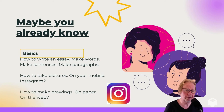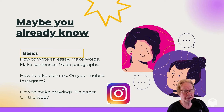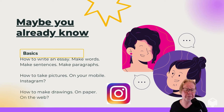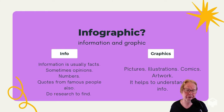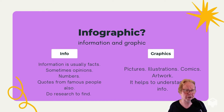Maybe you already know a little bit about how to write sentences and paragraphs in English. Maybe you can take pictures or make drawings. Those are good ways to begin to do an infographic. What is an infographic? It is information with graphics together. That means that your information are usually facts or opinions, numbers, quotes. You can do research to find all of those.